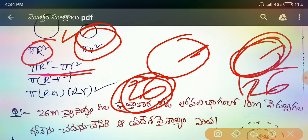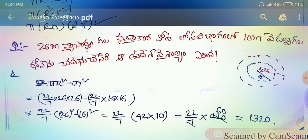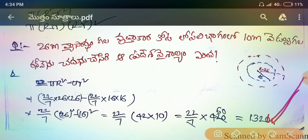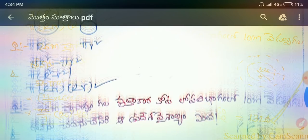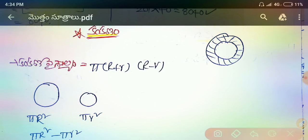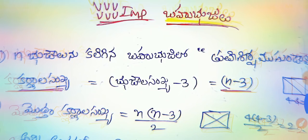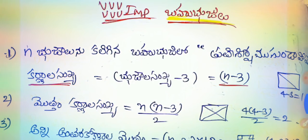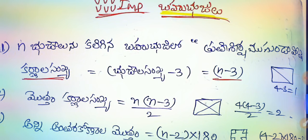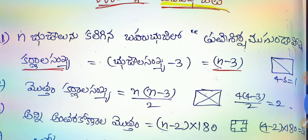If you take the picture of this one, the answer is 12, minus 12 squared. This is what we have done now. I am going to give you 5 into r plus 4 into r minus 4. This is very important. Very important.